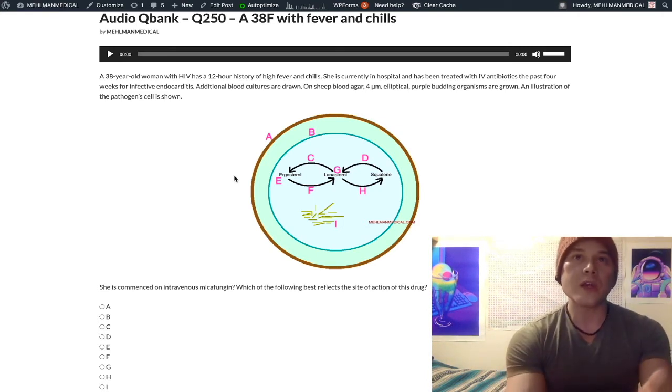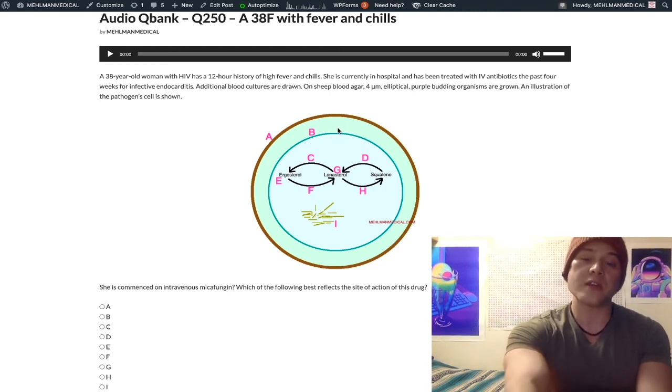I would say amphotericin B. But the question's clearly asking about micafungin. And if you were to say, well, when do we use caspofungin, micafungin, the answer is classically invasive infections like aspergillosis or candidemia. And that's what this patient received.